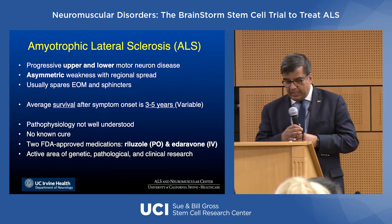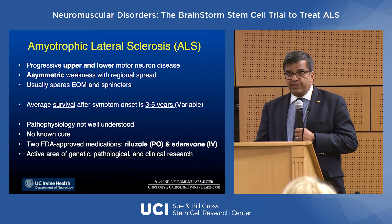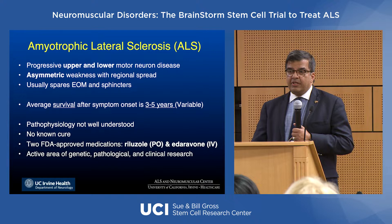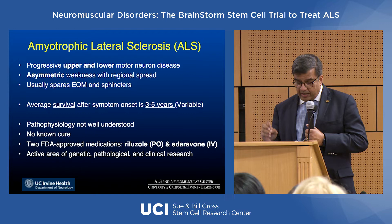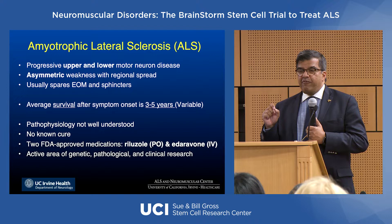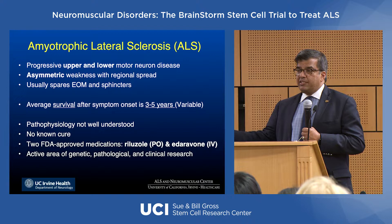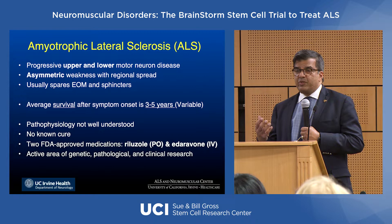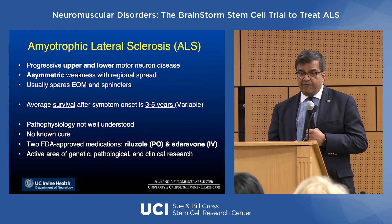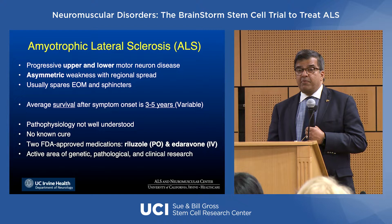We still don't fully understand the pathophysiology of ALS. At this current time, there is no cure — we can't stop the disease. All we can do is slow it down somewhat. There are drugs approved like riluzole and edaravone that provide a very modest benefit in slowing disease progression, usually not appreciable in individual cases — statistically significant only when you look at 100 cases. Despite the small number of ALS cases, it is an area of very active research with reasonably good funding, and big pharma has finally started paying attention.